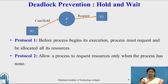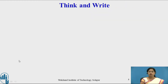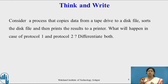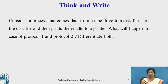In Protocol 1, process P must request both R1 and R2 initially, and both are allocated before execution begins. Now consider an example with one process and three resources — a tape drive, a disk file, and a printer — where the process copies data from the tape drive to the disk, sorts the disk file, and then prints the result. Consider how Protocol 1 and Protocol 2 are applied here.